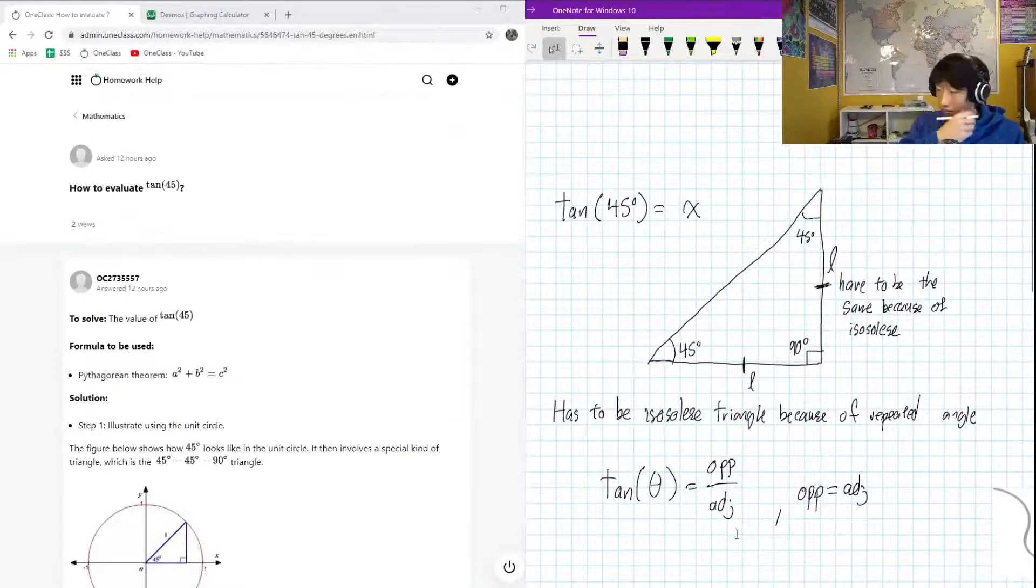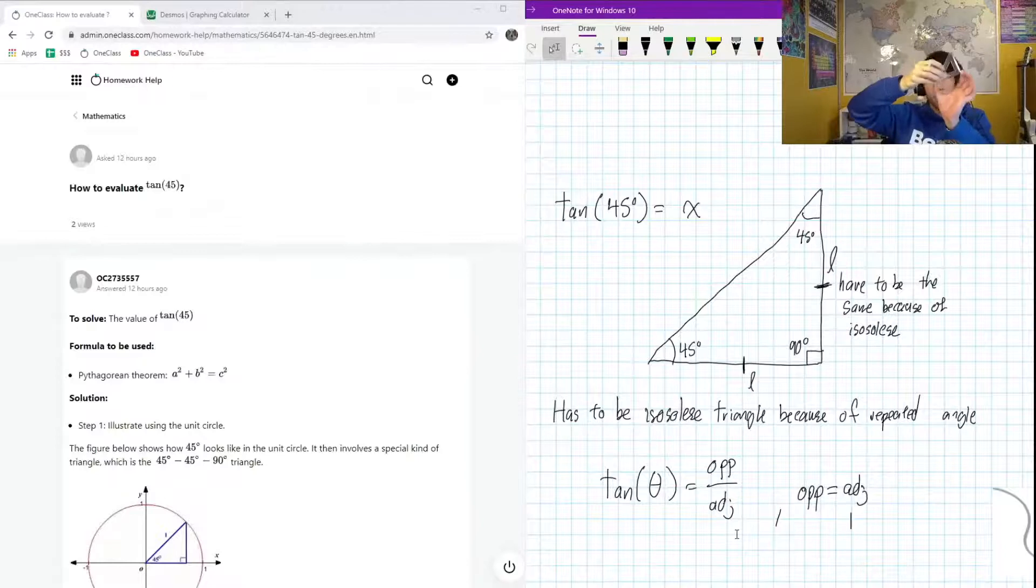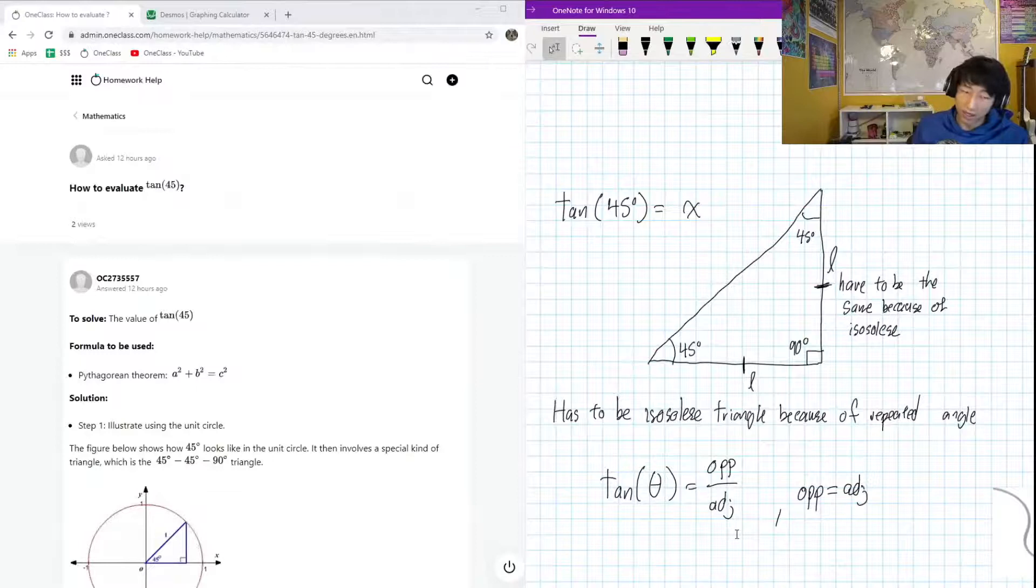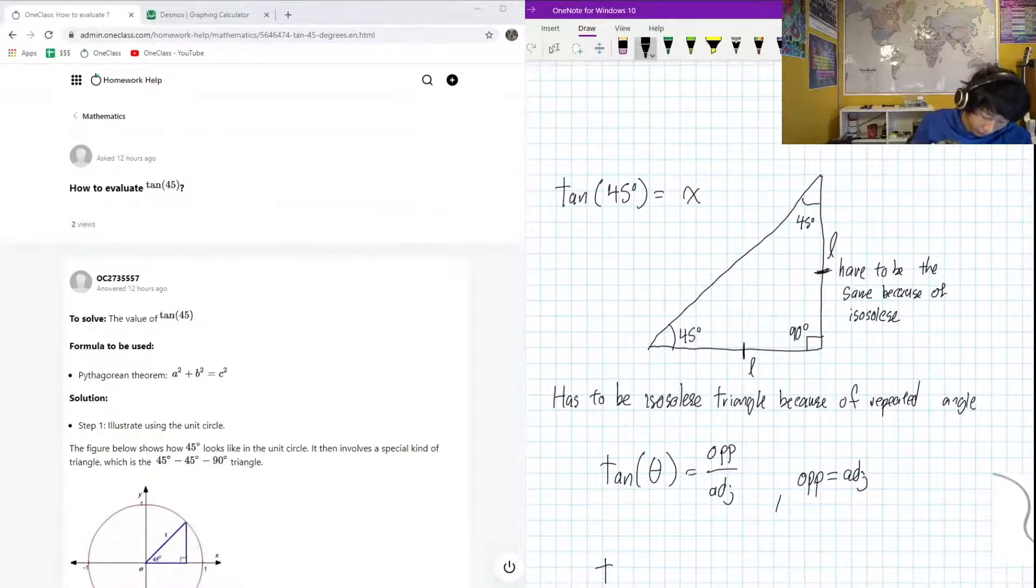So given that we have the same number on top and the bottom, we don't even need to know what it is. It could be, you know, this my triangle right here is maybe like 10 centimeters. But if we scale this up to a similar triangle where we had like a 10 meter right angle isosceles triangle, this would be exactly the same. We would have the same opposite, the same adjacent, anything divided by itself is one. So we know that tan 45 degrees has to be equal to one.